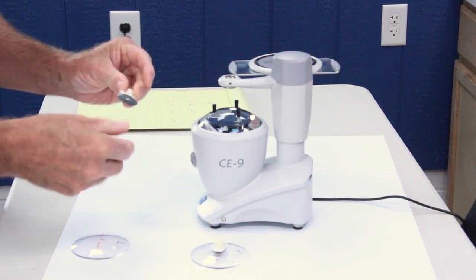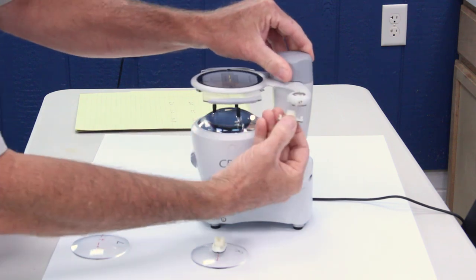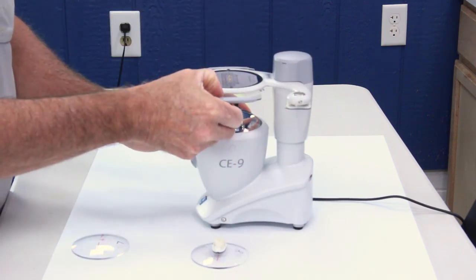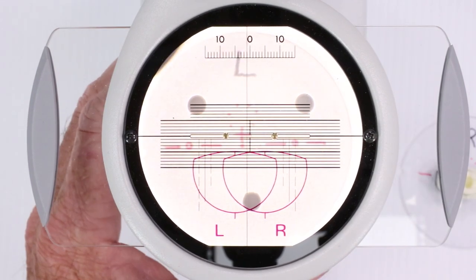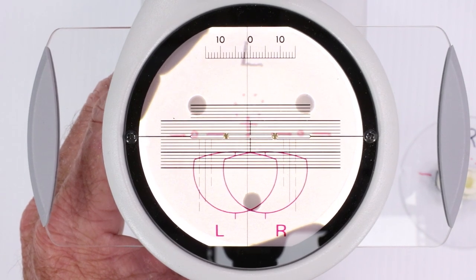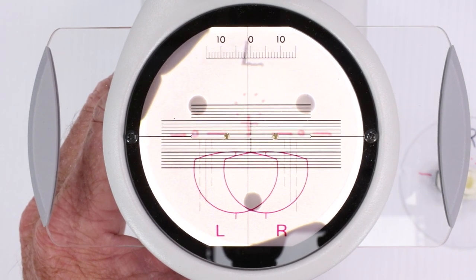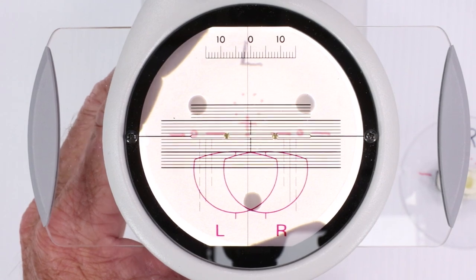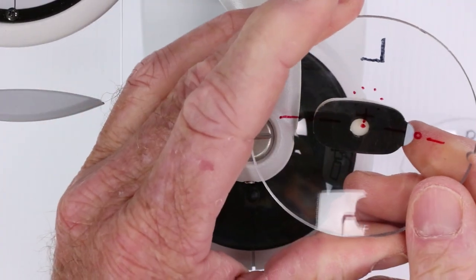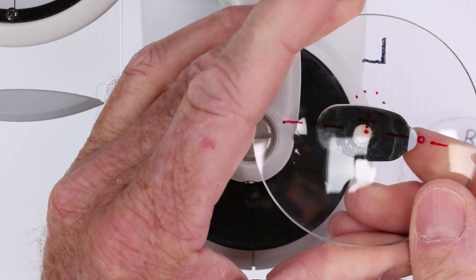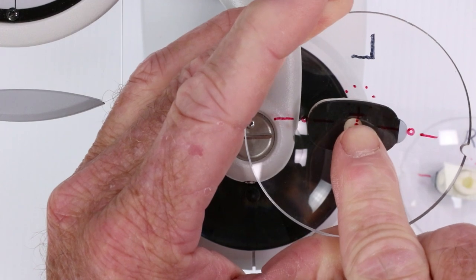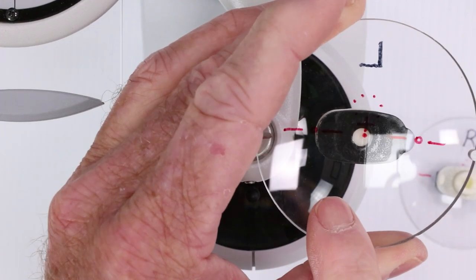And for our left, we have one over and four up. One over, one, two, three, four up. Keepin' my lines horizontal. Oh, looking good. One over, four up. There's the center of block, one over, and then our fitting cross, which is everything, is four up.